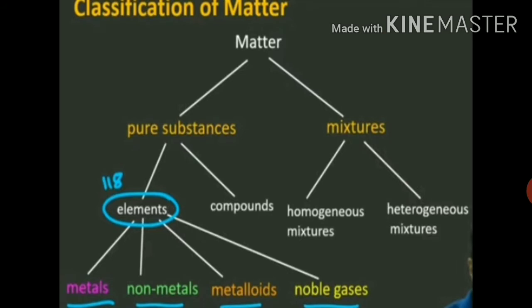One more definition for elements: an element is a substance which is made up of only one kind of atom. The smallest particle of an element is called an atom, or we can say that atom is the smallest particle of everything. For example, sulfur element is made up of only sulfur atoms, and gold element is made up of only gold atoms.